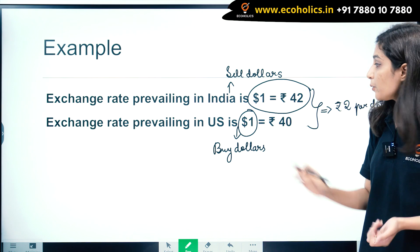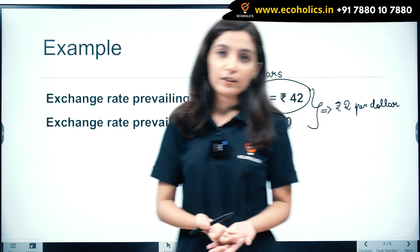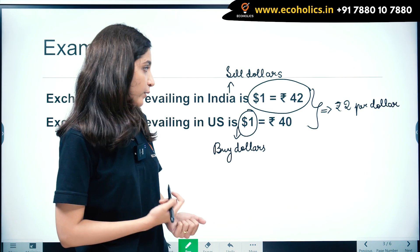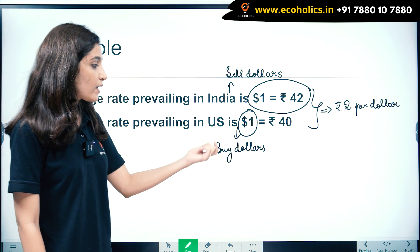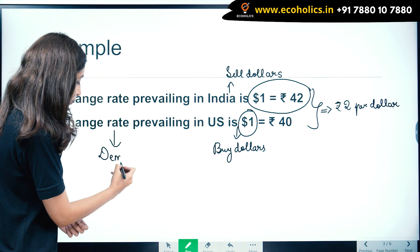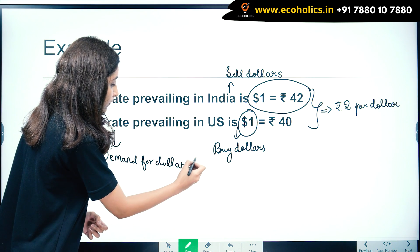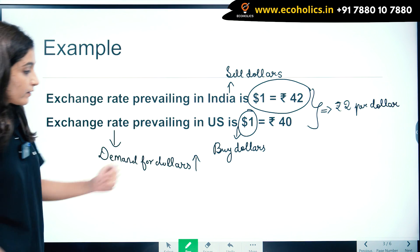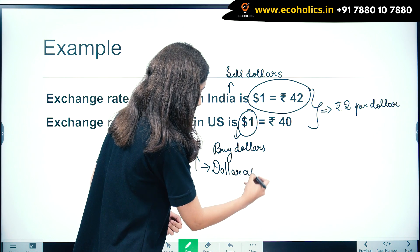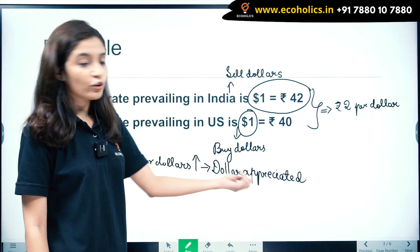Why did arbitrage take place here? Because there is an exchange rate difference between the two markets. Wherever there is an exchange rate difference, arbitrageurs buy and sell dollars to earn profit. Now, because arbitrageurs are buying dollars from the US market, the demand for dollars in the US is obviously going to rise. Because the demand for dollars rises, the dollar is going to get appreciated.